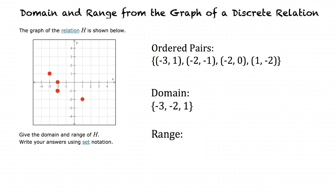So would the range consist of the second elements in the ordered pairs? Yes, exactly. In this case, our range would be negative 2, negative 1, 0, and 1. So to sum this up, first we must find the sets of ordered pairs, or the relation, and from those points, we have our domain being the first elements of the pair, and our range being the second elements of our pair.